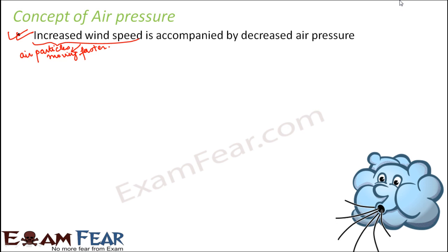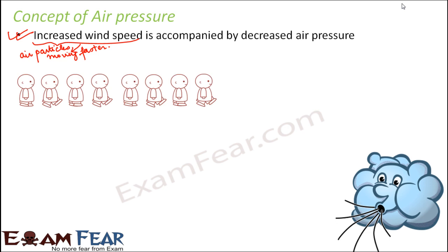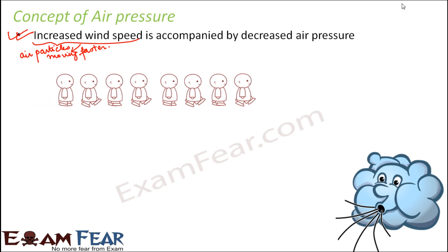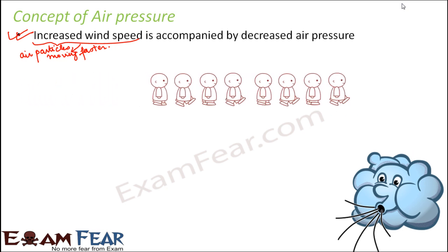Let's look at this example. I am going a little out of track to explain the relationship between wind speed and air pressure. Here you see a scenario like a queue of children — they are standing in a queue and moving one after another.